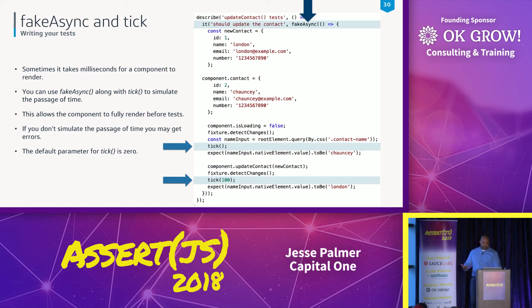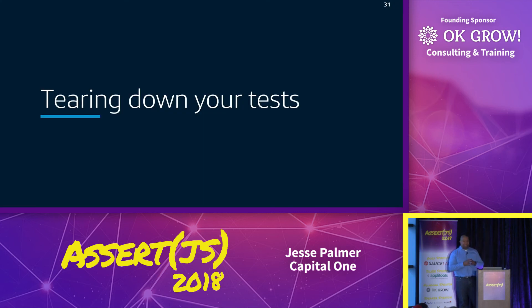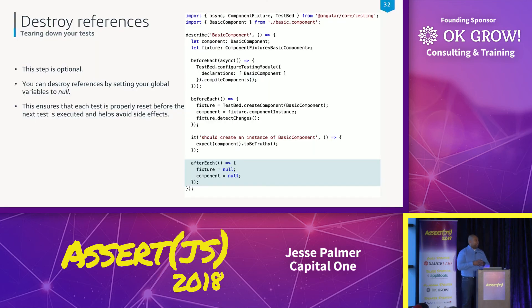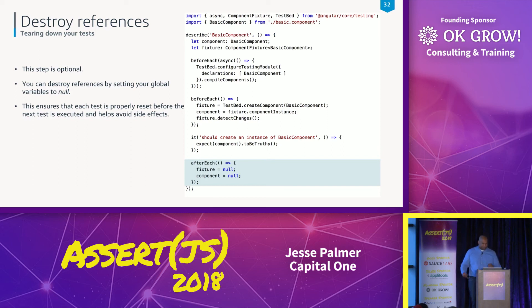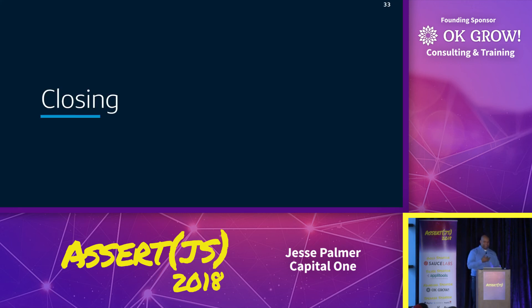Now we're talking about tearing down tests. This is pretty basic and I don't see it used often. You destroy your global variables by setting them to null, and it will execute after each test. In closing, we covered setting up tests, writing tests, and tearing down tests.